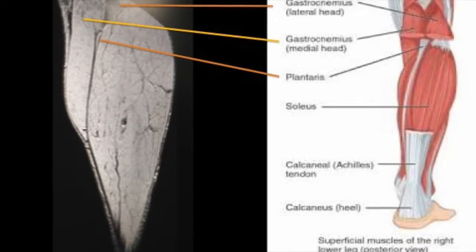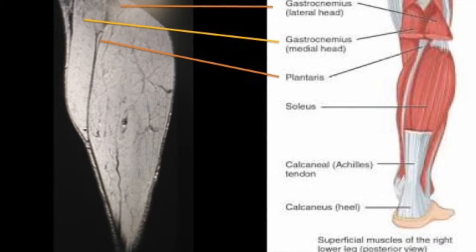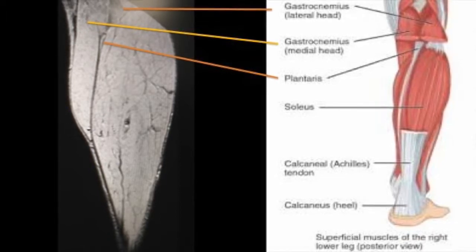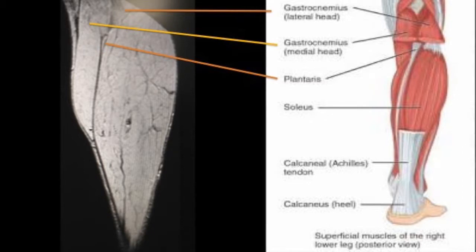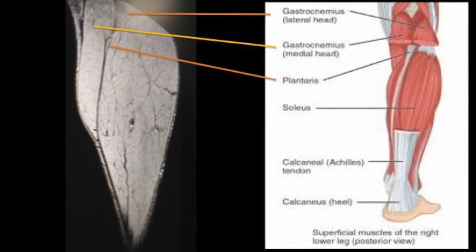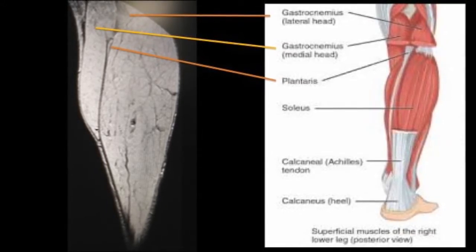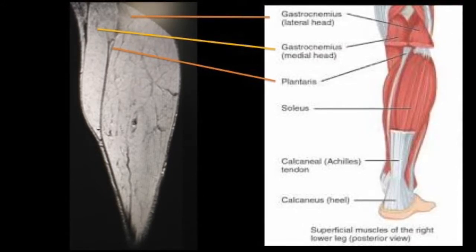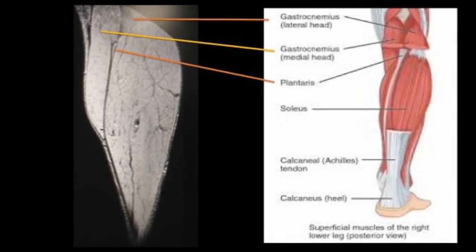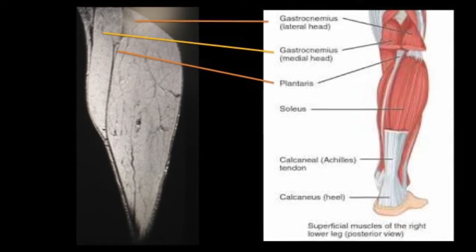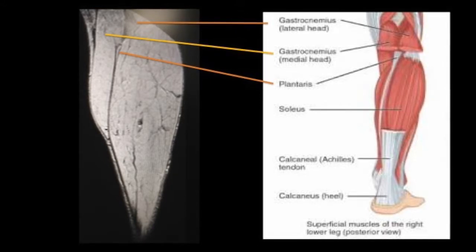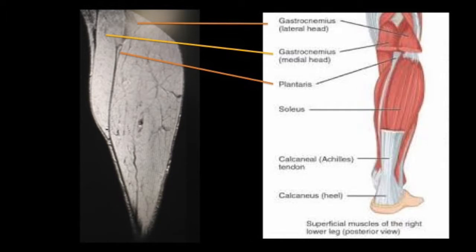Here we see the normal anatomy of the plantarus and the gastrocnemius muscles forming the calf. Plantarus is a very thin muscle arising from the lateral supracondylar ridge of the femur, above the lateral head of the gastrocnemius. It has a long tendon which runs along the calf and inserts into the Achilles tendon, deep to the gastrocnemius tendon. We must remember that in many persons the plantarus may be developmentally absent.